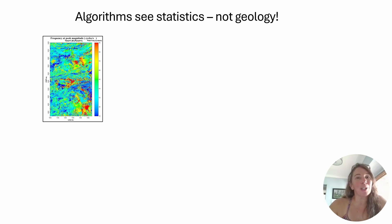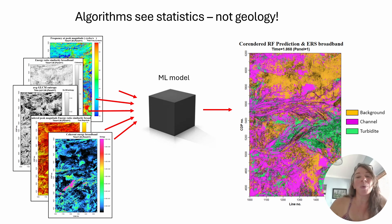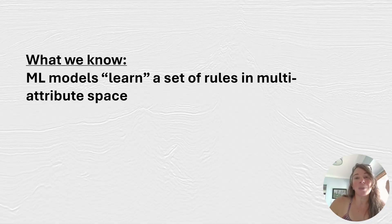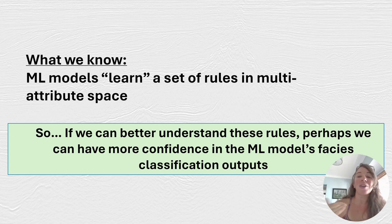SHAP is something that we're going to use to explain our machine learning attributes or results. When you are using an algorithm, particularly for seismic attributes, the algorithms are seeing statistics. We can input all of these different seismic attributes into that algorithm — or black box, to simplify it — and what we get out is some sort of result. In this case, we're using random forest for seismic facies classification. What I want to know as the interpreter and the geologist is what exactly is going on in that algorithm. Machine learning models tend to pay attention to a set of rules, typically statistical in nature, in multi-attribute space. If we can understand these rules, perhaps we can have more confidence when we're making our seismic interpretations on the machine learning model facies classification outputs.